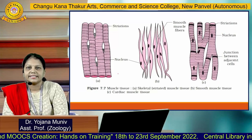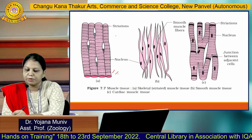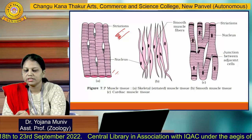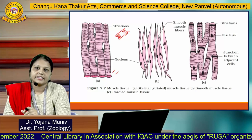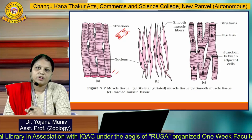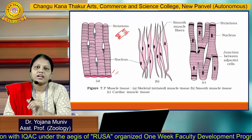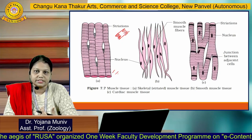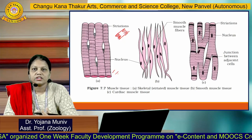Striated muscle fiber is called striated because when seen under a microscope it shows alternate dark and light bands. The dark bands are made up of myosin and the light bands are made up of actin. Actin and myosin are proteins that help in the contraction of muscles. They are also called skeletal muscles because they are related to the skeletal system, and they are also called voluntary muscles because they are under the control of your will.